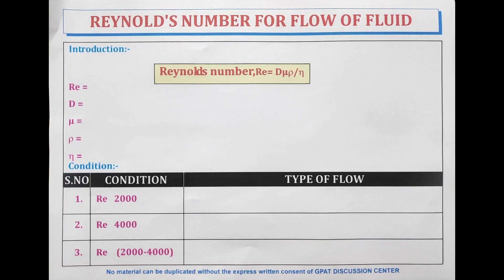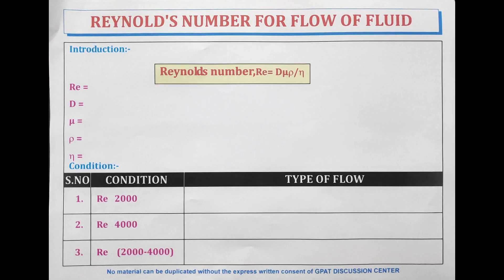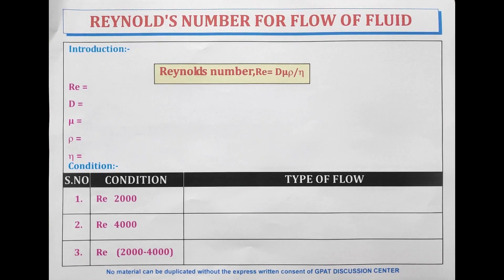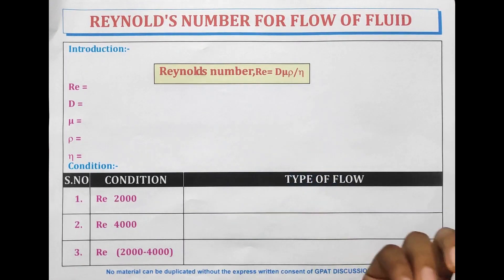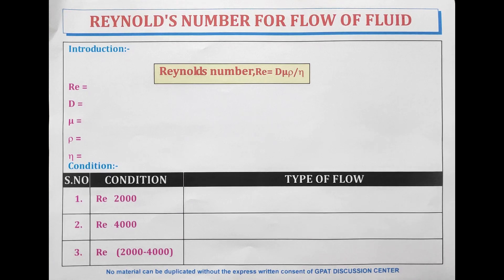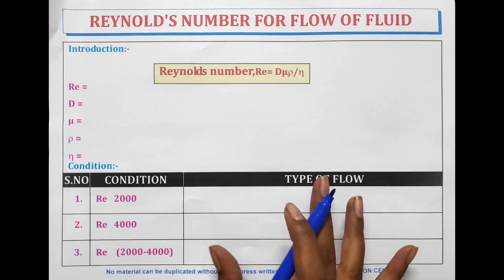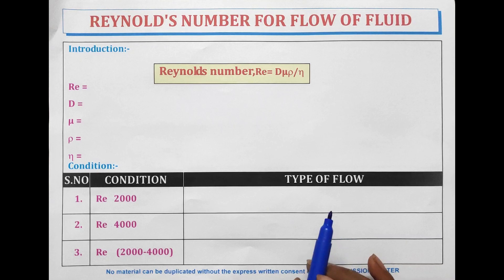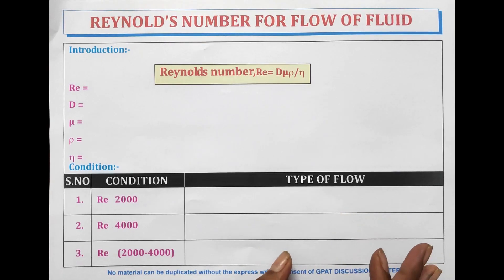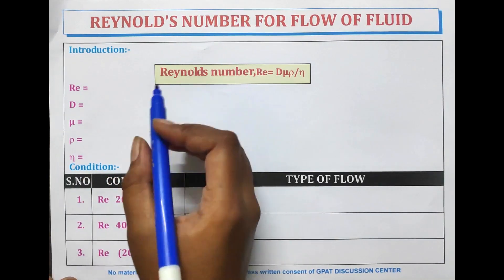Hello pharma aspirants, welcome or welcome back to GDC channel. In this video we are going to discuss about the Reynolds number for the flow of fluid. Reynolds number is a dimensionless number which is used in fluid mechanics to indicate whether the fluid flow past a body or in a duct is steady or turbulent.